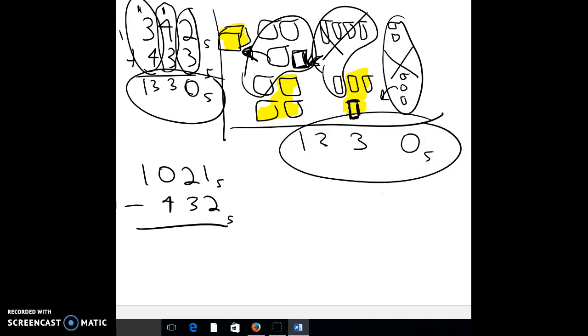Let's look at subtraction. We'll do the process first without the picture, and then we'll do the picture. Can I take 2 from 1? No. So I ungroup, but I'm not in base 10, so I don't get 10. When I ungroup, I get sets of 5. So I get 5 singles with 1 single. That's 6. 6 minus 2 is 4.